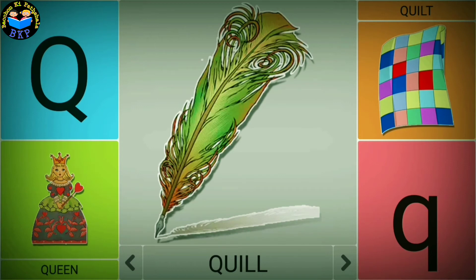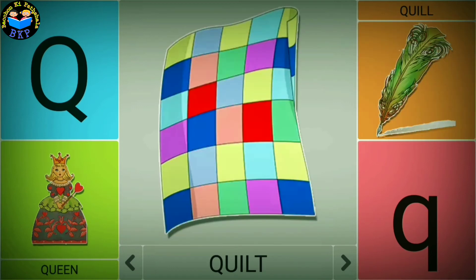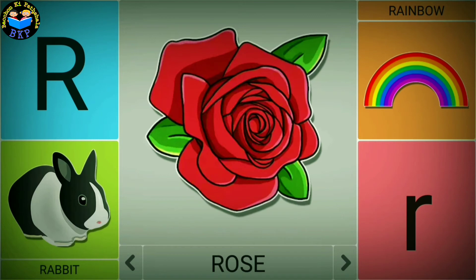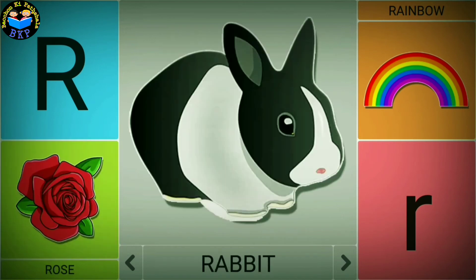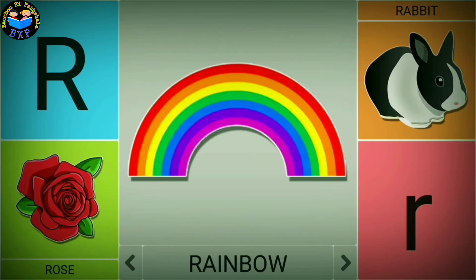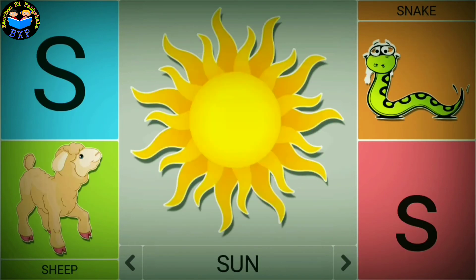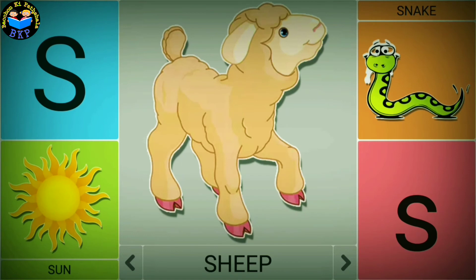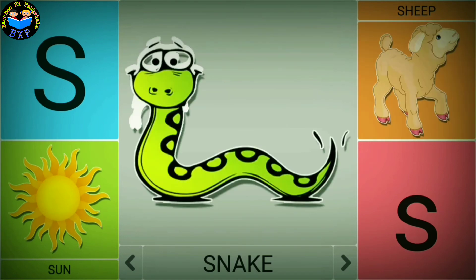Q is for queen. Q is for quill. Q is for quilt. R is for rose. R is for rabbit. R is for rainbow. S is for sun. S is for sheep. S is for snake.